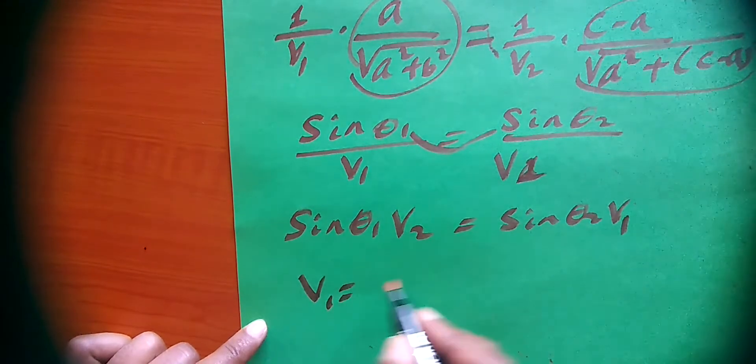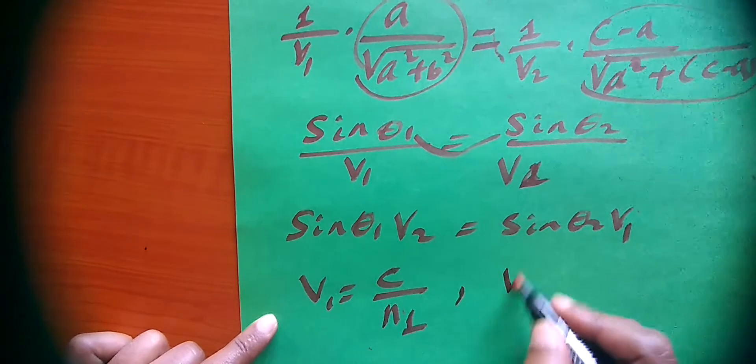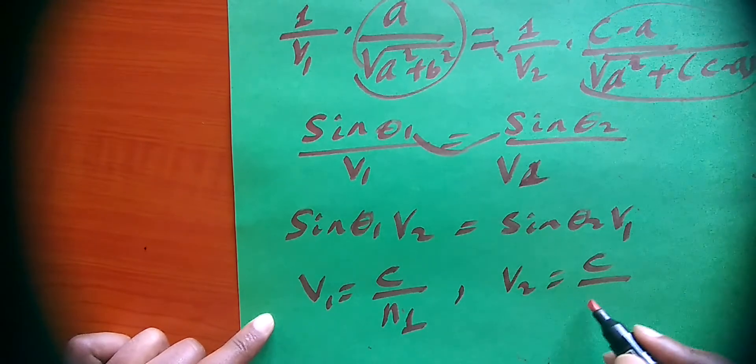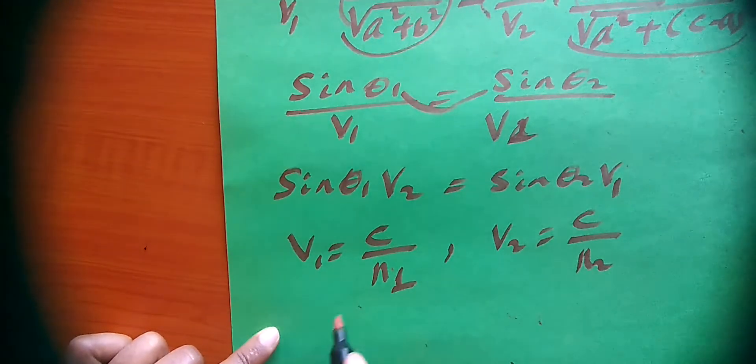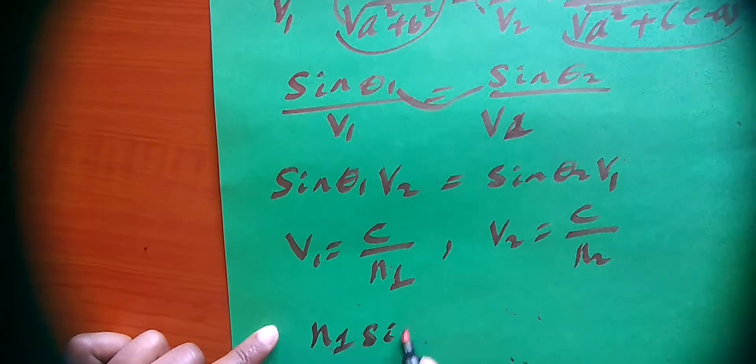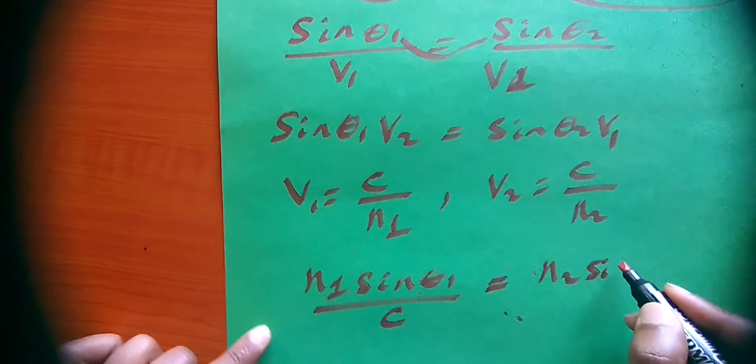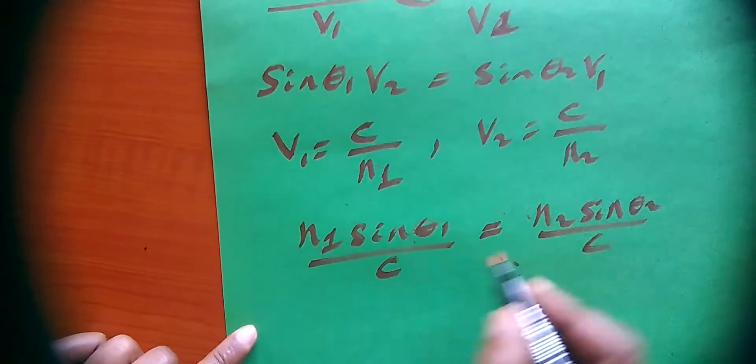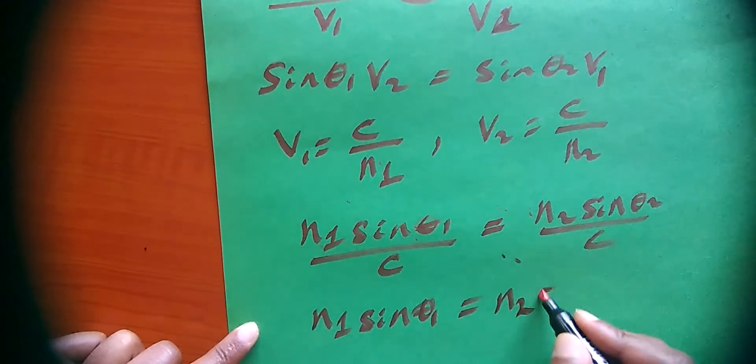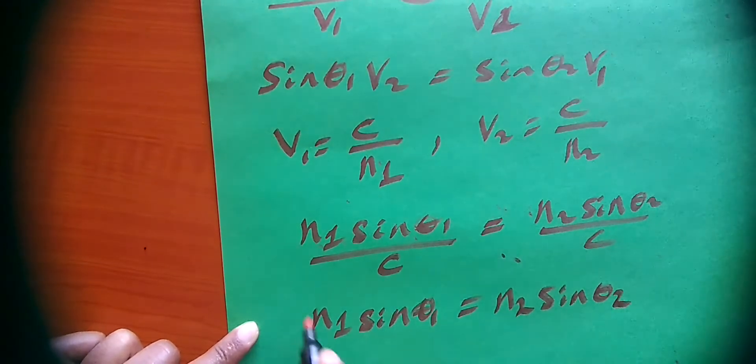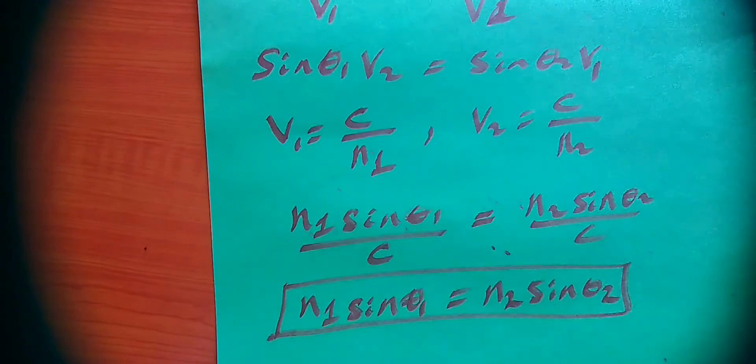Since v1 equals speed of light over refractive index one, and v2 equals c over n2, we get n1 sine theta one over c equals n2 sine theta two over c. Therefore n1 times sine theta one equals n2 sine theta two. This is the general equation of Snell's Law. Thank you, see you again, bye.